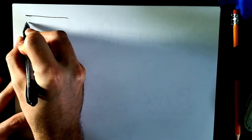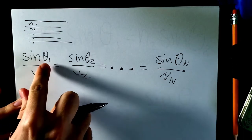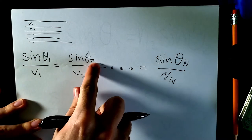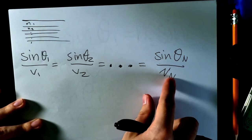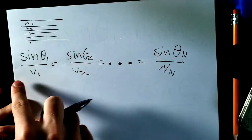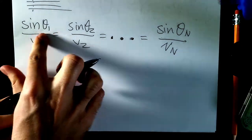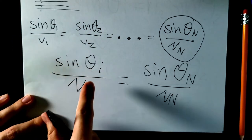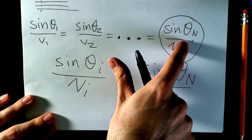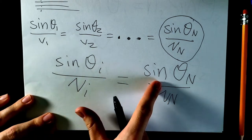If you have a bunch of different mediums with indices n1, n2, and so on, you can write an extended equation: sinθ1/v1 = sinθ2/v2 = sinθ3/v3 = ... = sinθn/vn. They're all equal, which is the very powerful thing about Snell's law. So you can set any sinθi/vi equal to the final one, sinθn/vn. It's that simple, and this will simplify things greatly in just a minute.